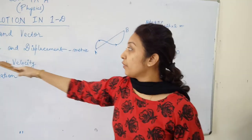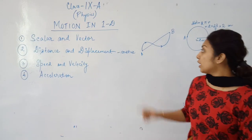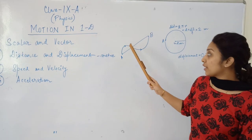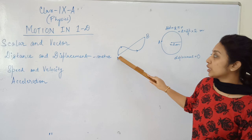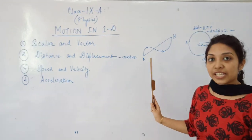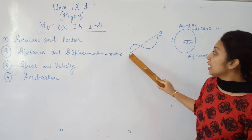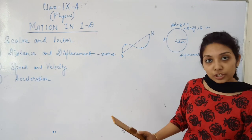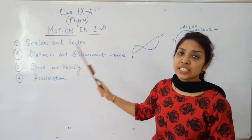Moving to the next subtopic: distance and displacement. The total path travelled by the body from A to B along the curved path is the distance. Displacement is the shortest distance between the initial and the final position. Here the initial position is A and the final position is B, and the shortest path is the straight line, which determines the displacement of the body.